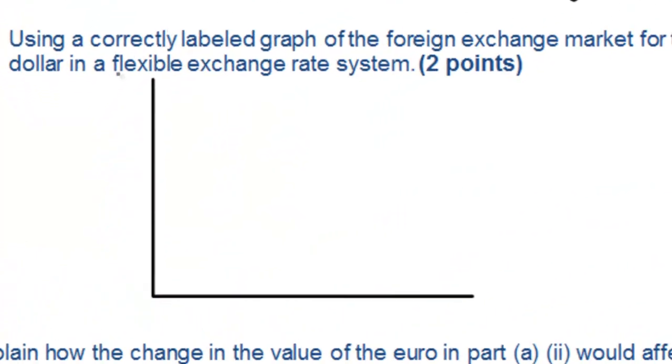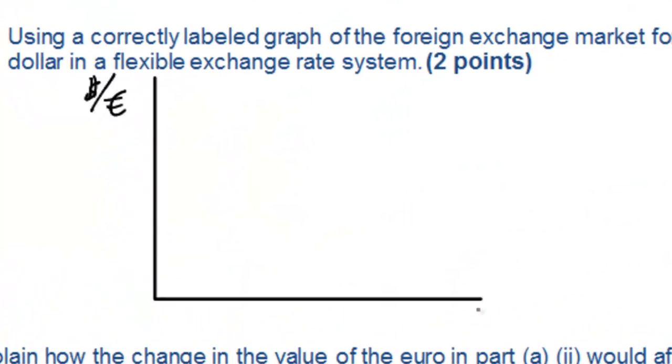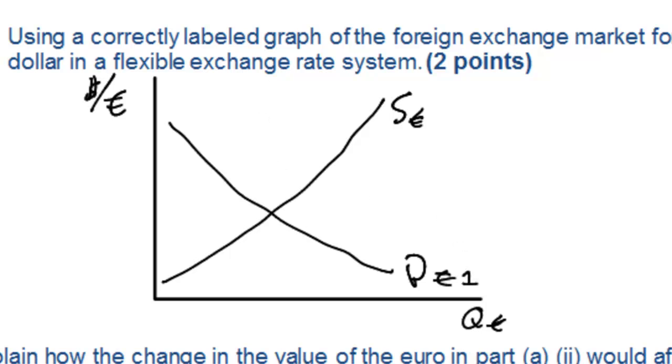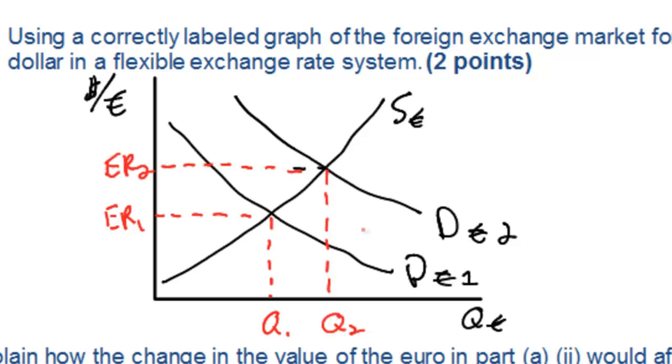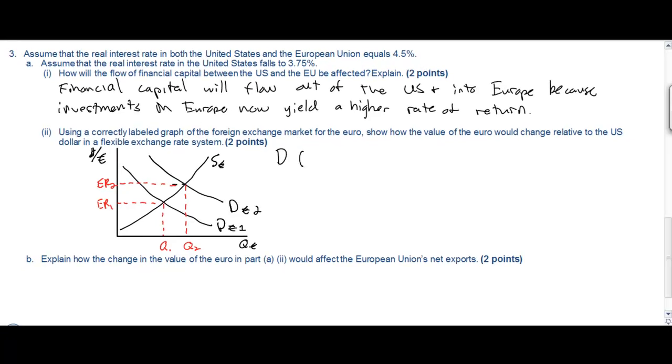Use a correctly labeled graph to show the effect that this has on the value of the euro against the dollar in a flexible exchange rate system. So here we're looking at the dollar price of euros, the supply of euros and the demand for euros. Originally the exchange rate would be ER1 but now that interest rates are relatively higher, demand for euros will rise as international savers wish to save more in the European economy causing the exchange rate of the euro to rise.